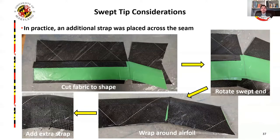First, the fabric is cut to shape using a template. Then the swept tip is rotated to maintain the ±45 degree layup and wrapped around the tip. An additional strap is then placed over the seam to create a lap joint and ensure proper load transfer between the swept and straight portions of the blade. At this stage, all swept blades are built and ready for testing.